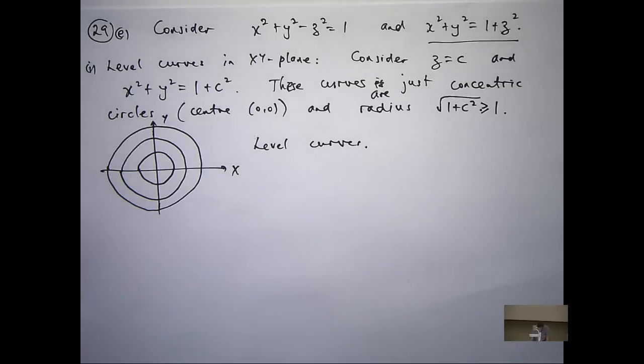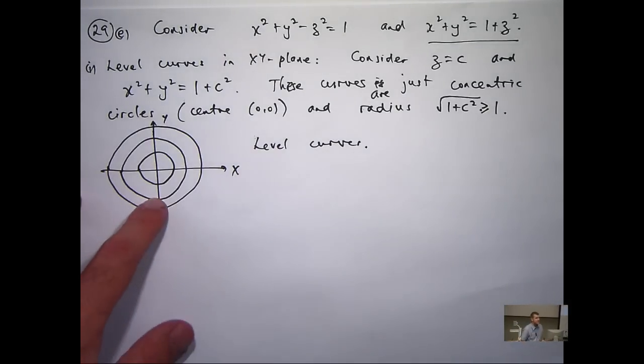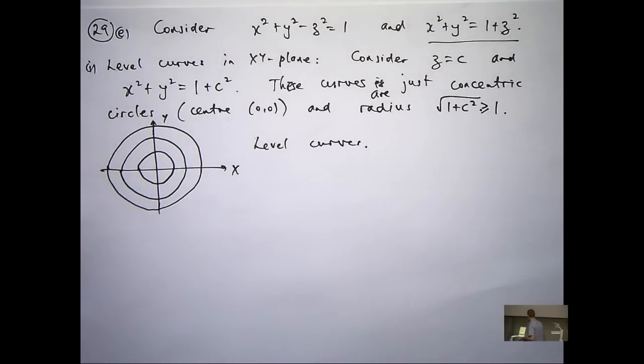Now, note that each curve corresponds to two values of C. So this one, the middle circle, might correspond to C equals 1 and negative 1. It's the same curve. So what does that mean? Well, when you're moving those things around, you know you've got to pull that circle up one value above the XY plane, and also push it down one value below the XY plane.